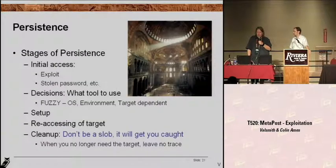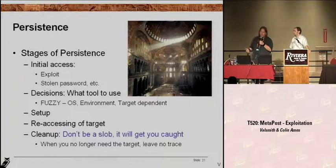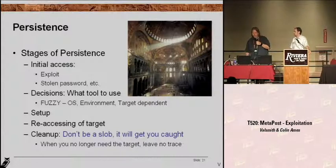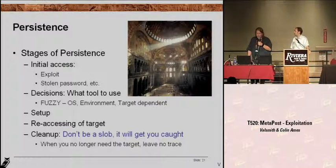We've broken down the stages of persistence, which start off as the initial access — when you exploit the box either with Metasploit, a standalone exploit, or a stolen password, and you break in. At that point you've got to make a decision: what do I use to get persistence? Am I going to upload a backdoor? Am I going to upload a rootkit? It's really OS-dependent and target-dependent. Then you're going to set up your persistent mechanism and come back to the target on successive occasions. I'm a big advocate of cleanup — I've seen a lot of pen testers leave 100 different tools on the target, which gets you caught and makes forensics really easy. So leave no trace.